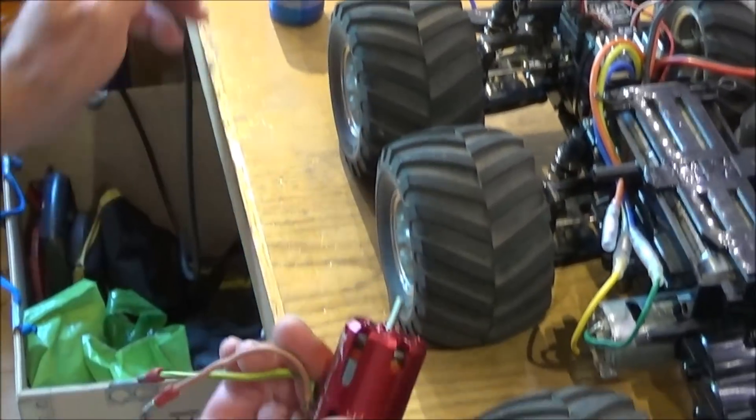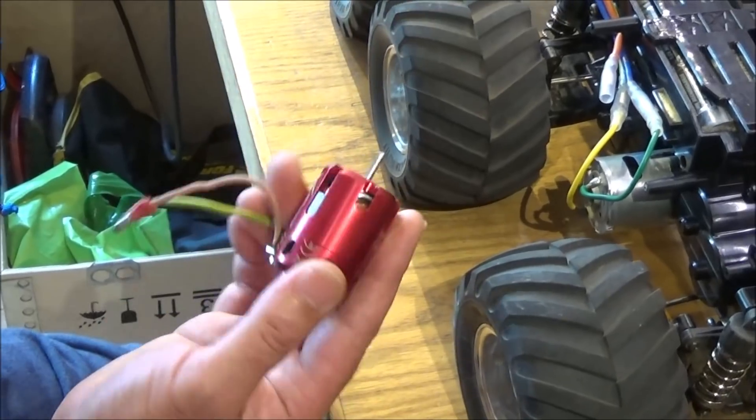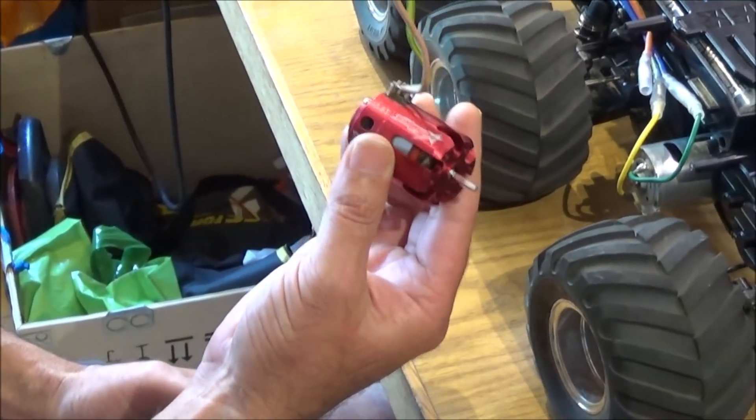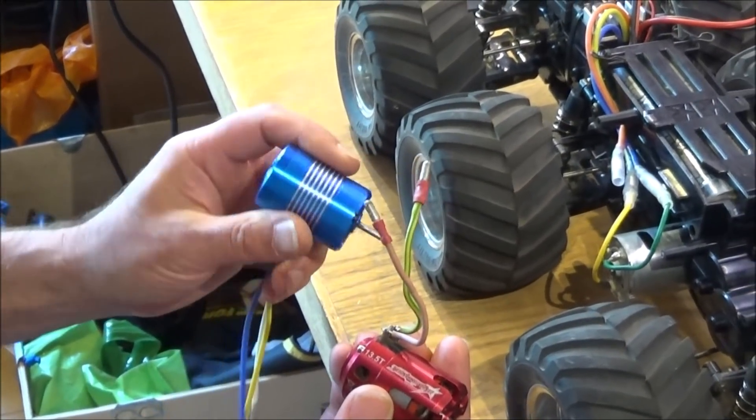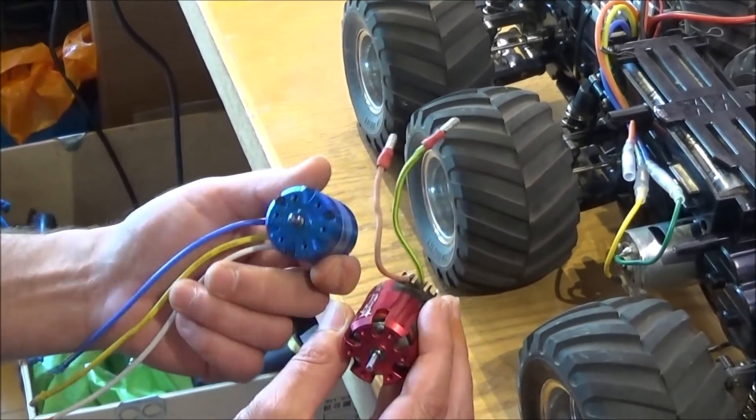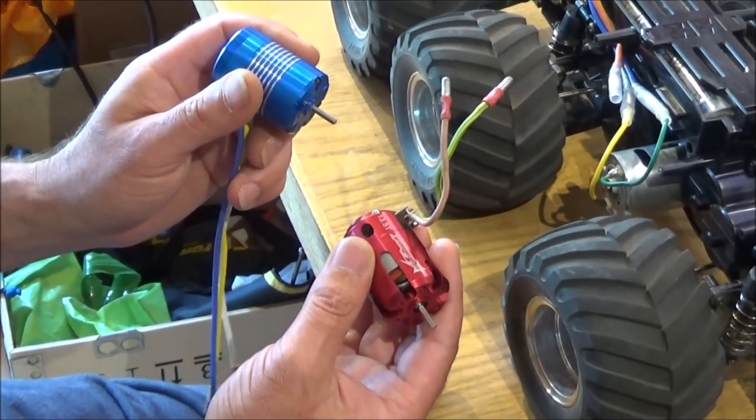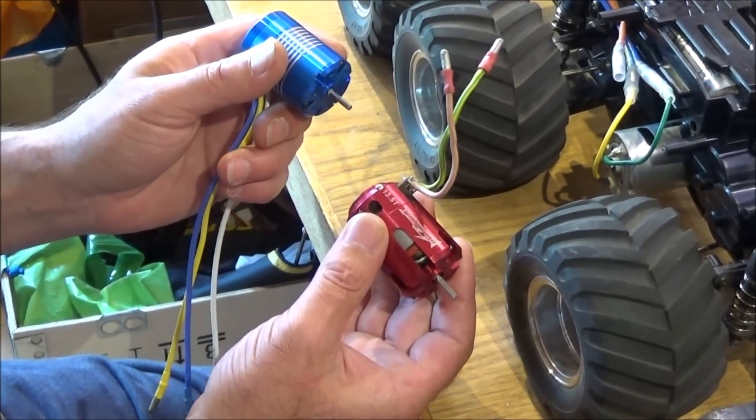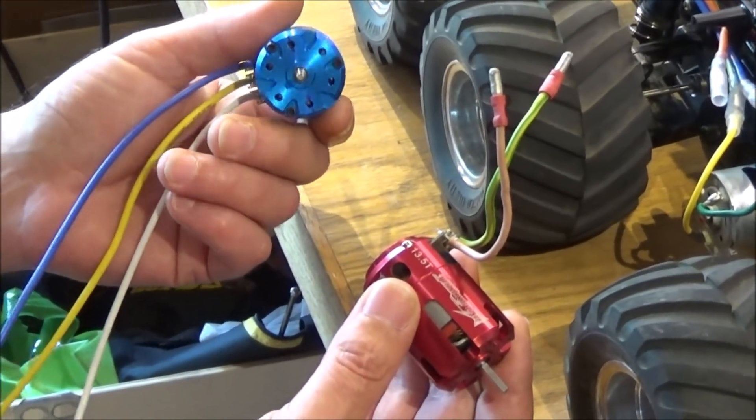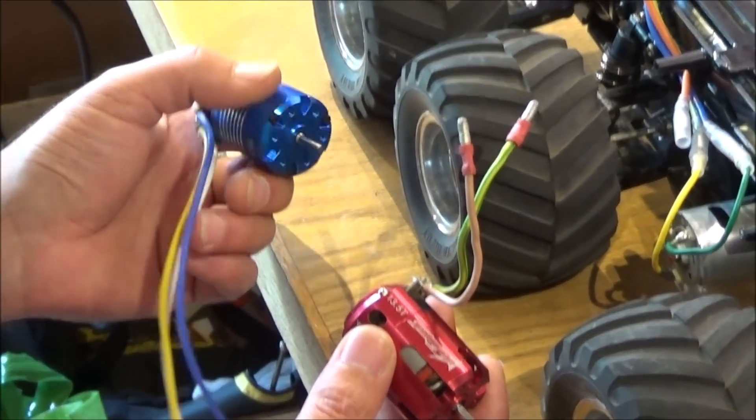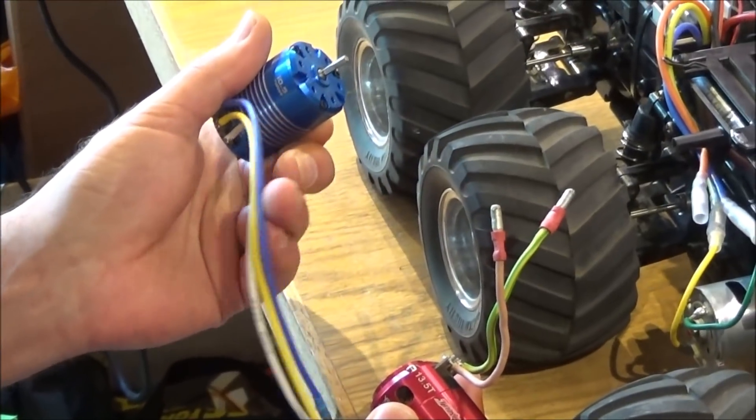This is a Turnigy Trackstar 13.5, I think that's 3100kV, and this is an unbranded sensor brushless. Very similar specs. I think the 13.5 is about 3000kV or 3.1. You can get these in different turns. This is a 10.5 that Rob's going to put in his Wild One.